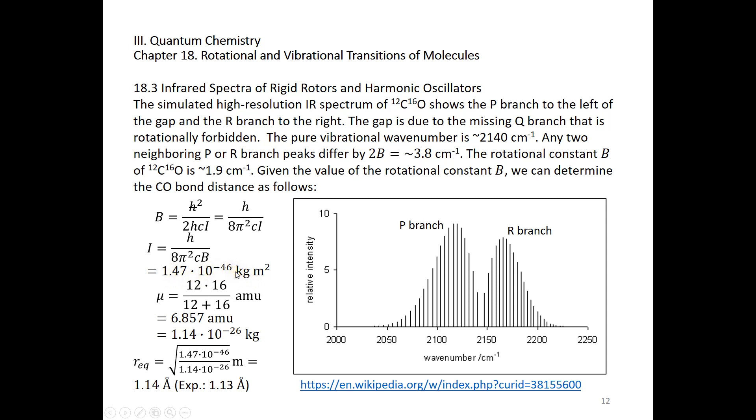The moment of inertia is μr². So we compute μ. μ is 12 times 16 over 12 plus 16 AMU, about 7 AMU or 1.1 times 10⁻²⁶ kilograms. Then given I, given μ, we have the equilibrium bond distance: the square root of moment of inertia over the reduced mass. We get 1.14 angstroms. The experimental value is 1.13 angstroms. So the theory prediction is fairly accurate.